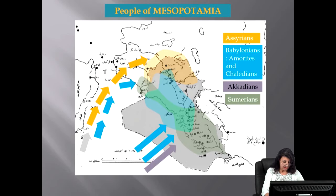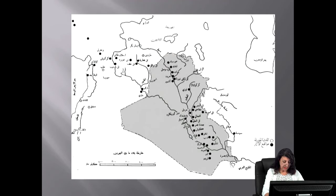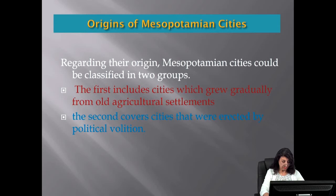Sumerians settled in the south of Iraq. Their origin is still unknown to archaeologists. The Akkadians formed the first Bedouin immigration to Mesopotamia from the Arab Peninsula. The Amorites, Assyrians, and the Kaledians followed, and their cities filled the map of Iraq and the surrounding area.